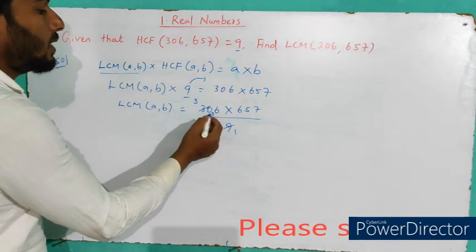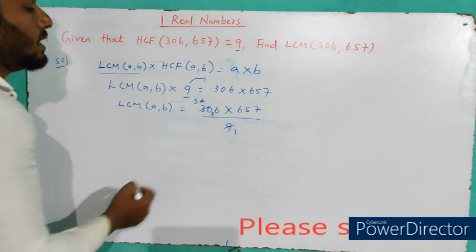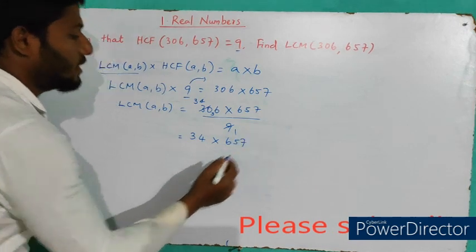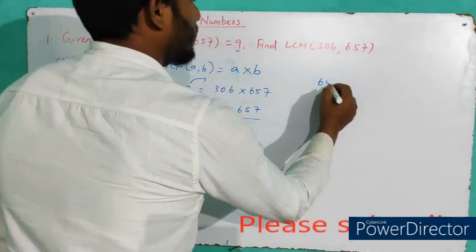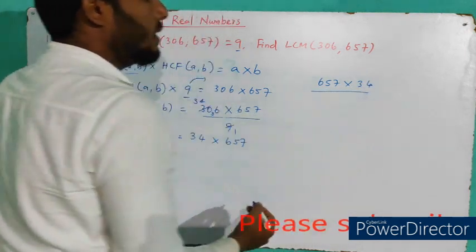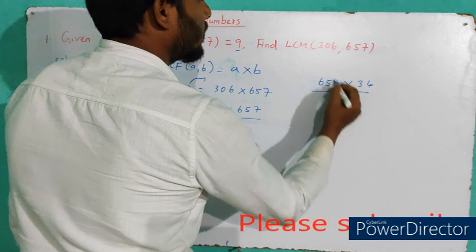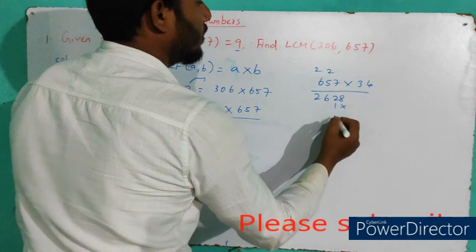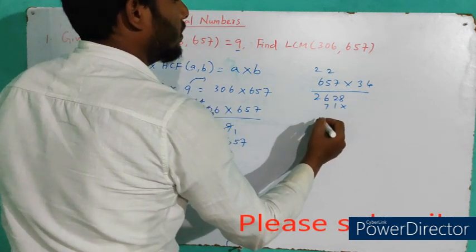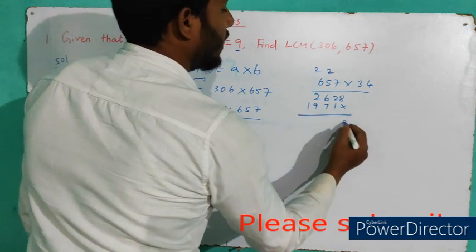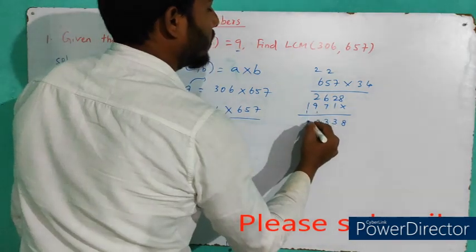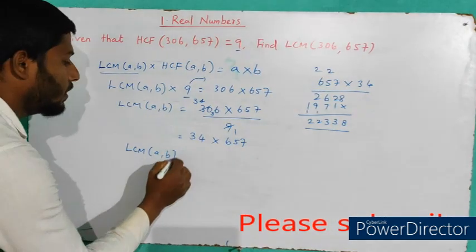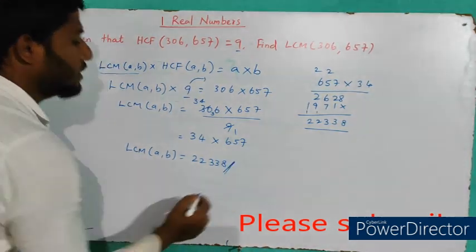After cancellation we get 34 into 657. Multiplying 657 by 34 gives 22,338. Therefore, LCM of (a, b) is 22,338. This is the answer to the first important question.